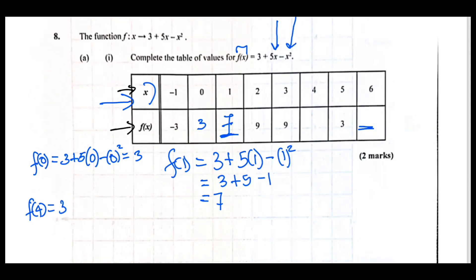f(4) is 3 + 5 times 4 - 4², which is 3 + 20 - 16. You still get back your 7. And do the last one, f(6): 3 + 5 times 6 - 6², which is 3 + 30 - 36, negative 3.